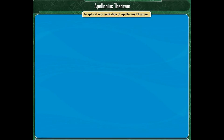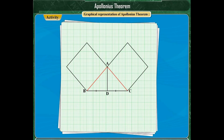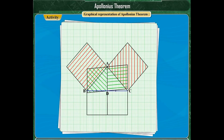Graphical representation of Apollonius' theorem. We will see the proof of Apollonius' theorem through one activity. On a graph paper, draw a triangle ABC and draw a median AD. Draw squares on sides AB and AC of triangle ABC and colour them with red colour. Then draw two more squares on both sides of median AD and colour them with green colour. Draw squares on BD and DC also, colouring them with blue colour.